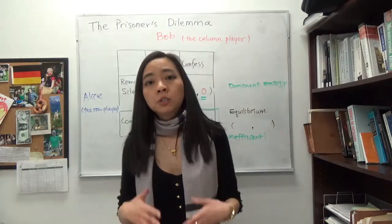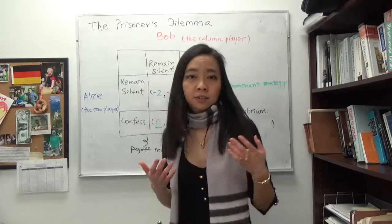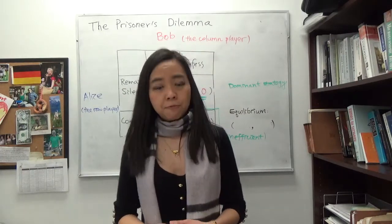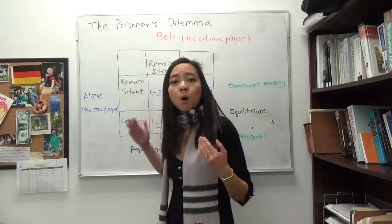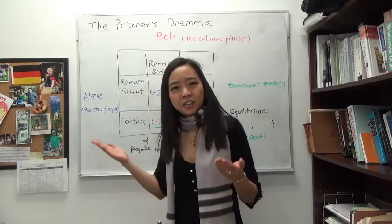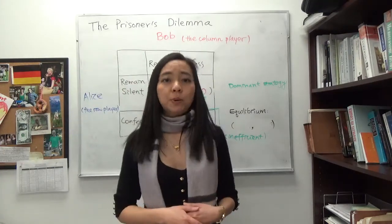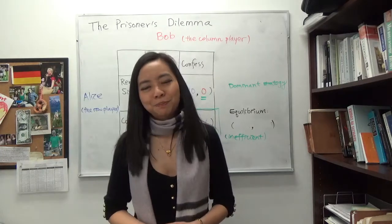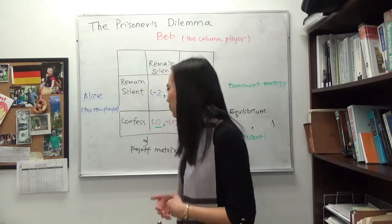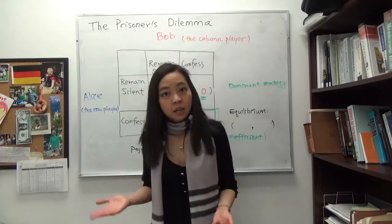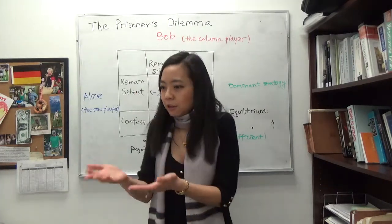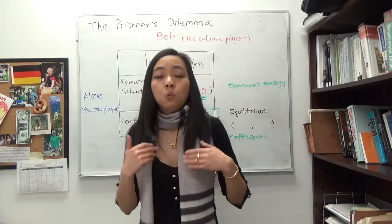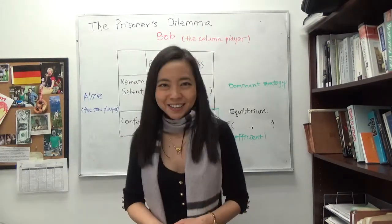The FBI actually doesn't have enough evidence to get a conviction, so they will need Alice and Bob's cooperation — telling the truth — so the FBI will be able to get enough evidence and get a conviction. Usually what the FBI does is: if you cooperate with us and tell us the truth, we're going to reward you with a lighter sentence.